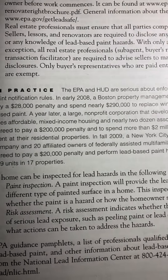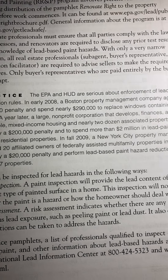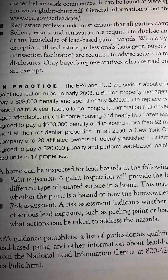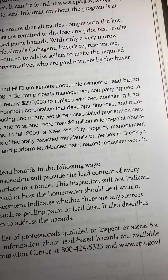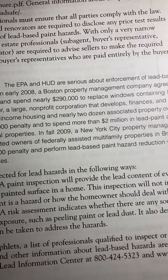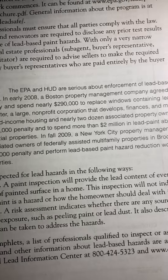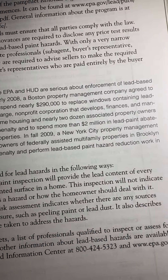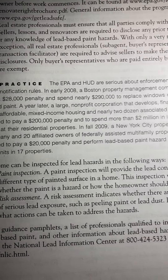A home can be inspected for lead-based paint. A paint inspection will provide the lead content of every different type of painted surface in a home. This inspection will not indicate whether the paint is a hazard or how the homeowner should deal with it. A risk assessment indicates whether there are any sources of serious lead exposure, such as peeling paint or lead dust, and describes what actions can be taken to address the hazards.